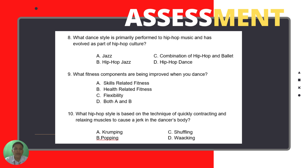Number ten: What hip-hop style is based on the technique of quickly contracting and relaxing muscles to cause a jerk in a dancer's body? Is it A — cramping; B — popping; C — shuffling; or D — waacking?